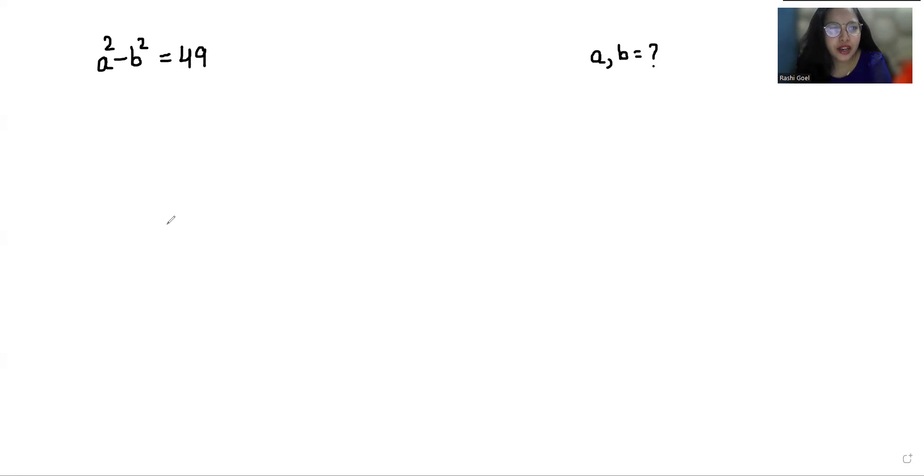Hello everyone, welcome to my channel. My name is Rashi Goyal, and in this video we are going to solve a² - b² = 49. We have to find a and b, so let's start.